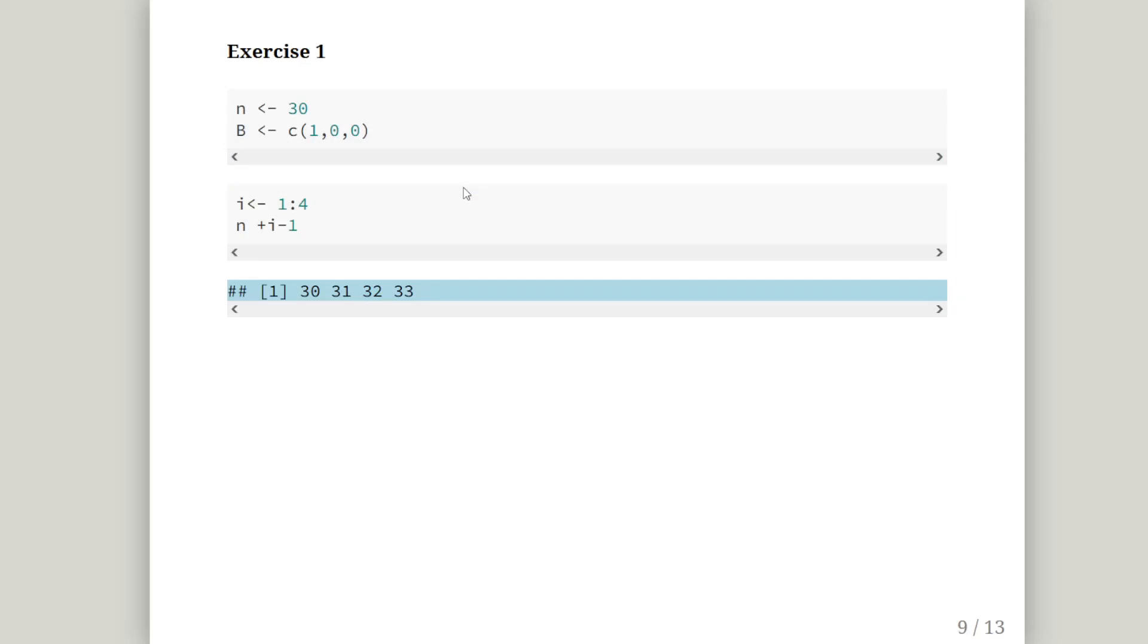So exercise one, we're dealing with a 30 year old. I'm just going to set that up, n equals 30. And the first state is healthy. So healthy is 1, sick is 0, dead is 0. So that's just setting up my data structures.